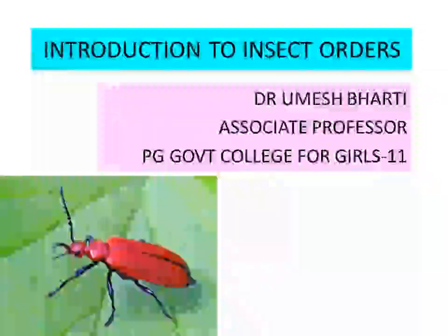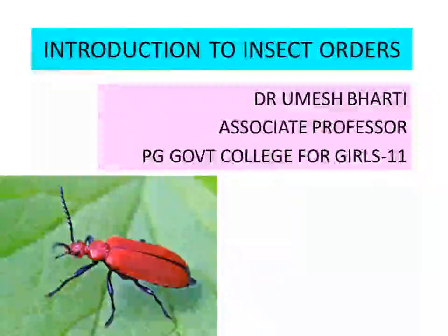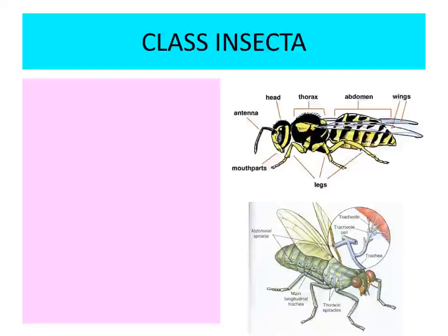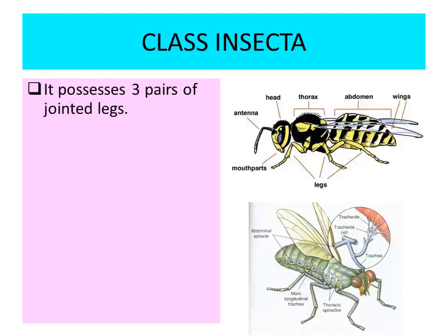Hello, good morning students. Today I will introduce you with some insect orders. We have studied various insects. Now coming to the class Insecta, the important characteristic feature of class Insecta is that it has three pairs of jointed legs. Jointed legs means that it belongs to phylum Arthropoda. Arthro means jointed, poda means legs. So class Insecta has got three pairs of jointed legs, whereas phylum Arthropoda has jointed legs.